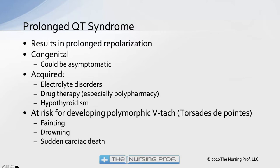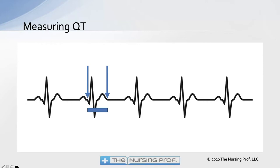These patients are at risk for developing polymorphic VTAC, or torsades. Typically the patient will have fainting, could end up drowning if they were swimming and go into a polymorphic VTAC, or suffer sudden cardiac death. What we're talking about with prolonged QT syndrome is that measurement from the beginning of the Q to the end of the T wave.